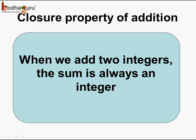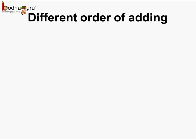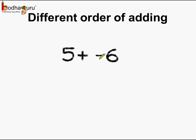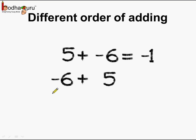Now let us see another property related to addition. Let us try adding two numbers in different order. First, we will add 5 and minus 6. Here, 5 is a positive integer and minus 6 is a negative integer. By taking the absolute values, we subtract 6 minus 5 which is 1, and then we put the sign of the bigger number which is 6, which has a negative sign. So the answer is minus 1. Now let us change the order of addition — this becomes minus 6 plus 5, and here again the answer is equal to minus 1.